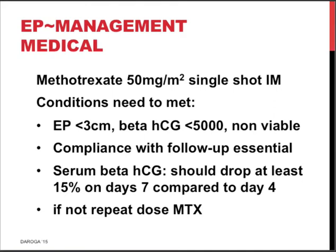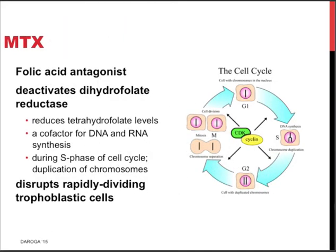Comparing treatment with laparoscopy versus methotrexate: after laparoscopy, the operation is finished and successful, whereas with medical treatment we wait and follow the beta-HCG to confirm the trophoblast has stopped producing it. Methotrexate is a folic acid antagonist — as shown in the cell cycle diagram — and it disrupts the rapidly dividing trophoblastic cells. Beta-HCG can be regarded as a unique and specific tumor marker for pregnancy, and in this case for ectopic pregnancy.